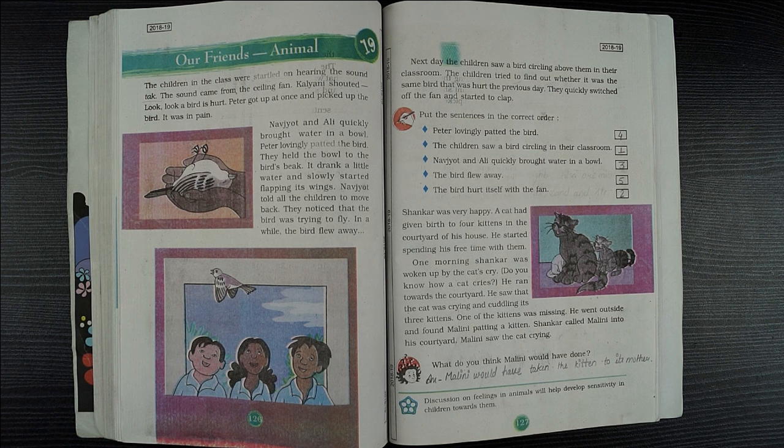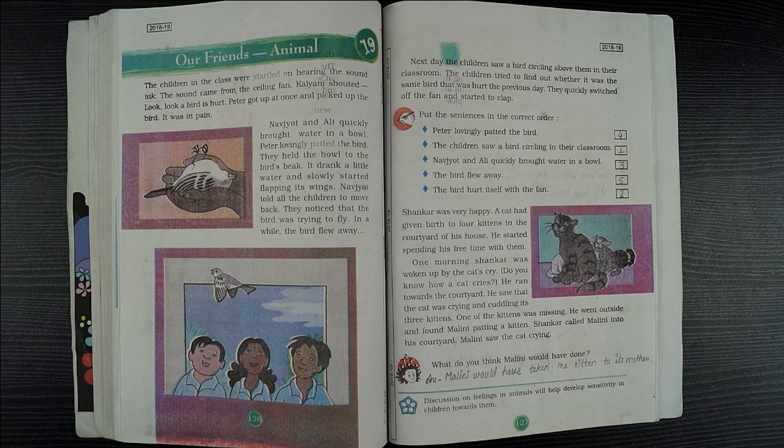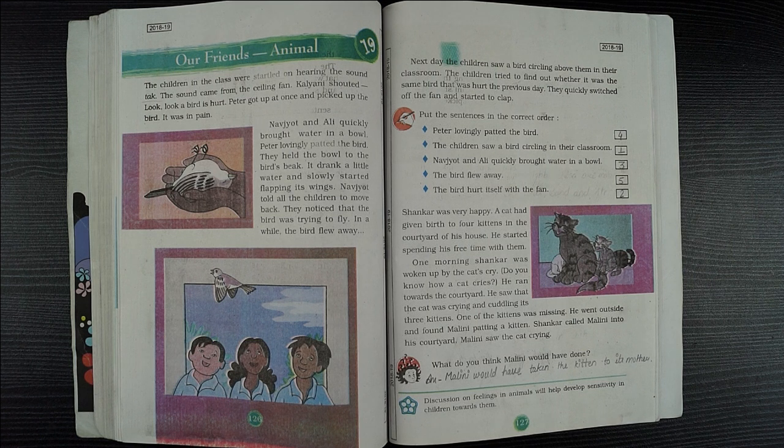Hello everyone, my name is Anshita Jain. Welcome to our channel Enriched Minds. Today, we will start chapter 19 with the name Our Friends Animals.